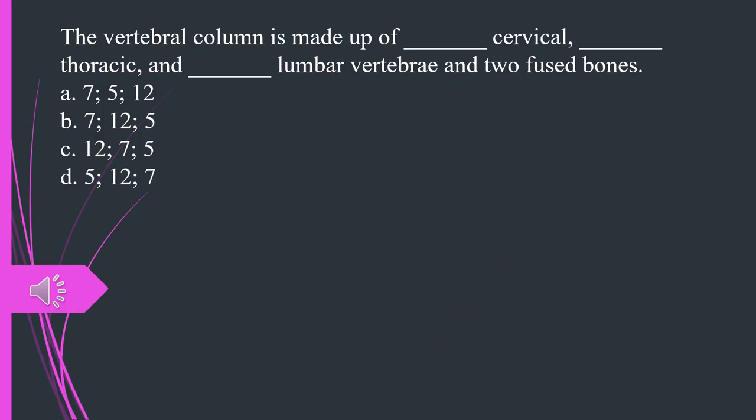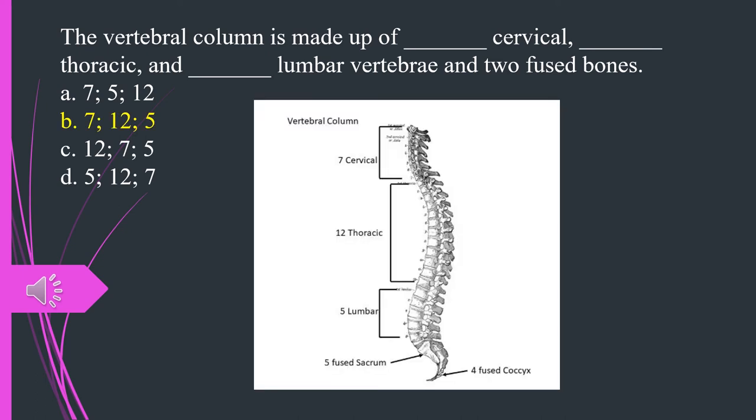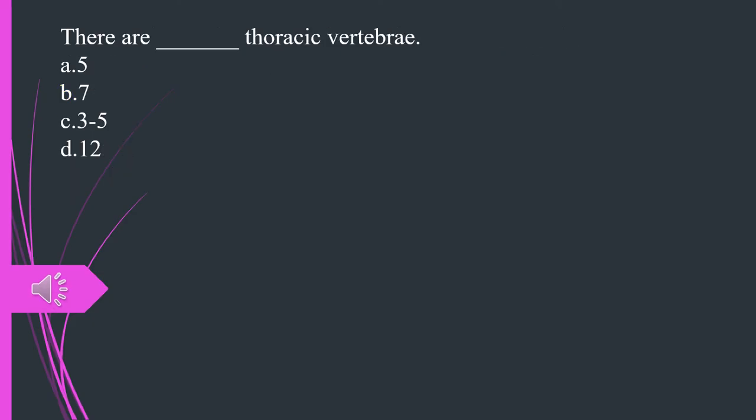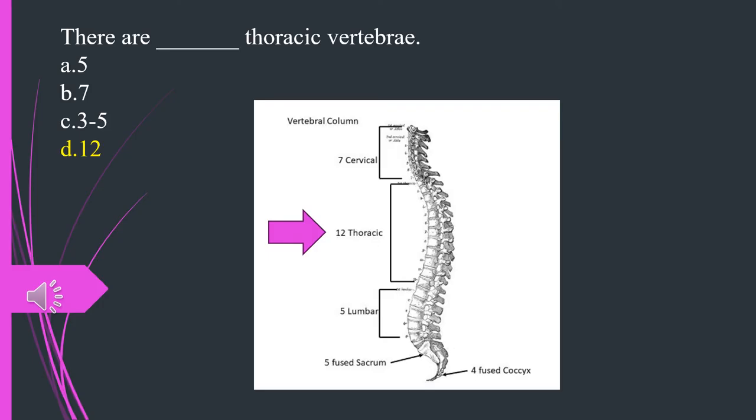The vertebral column is made up of how many cervical, thoracic, and lumbar vertebrae and two fused bones? A. 7 5 12. B. 7 12 5. C. 12 7 5. D. 5 12 7. The answer is B. 7 12 5. There are how many thoracic vertebrae? 5, 7, 3 to 5, or 12? The answer is 12.